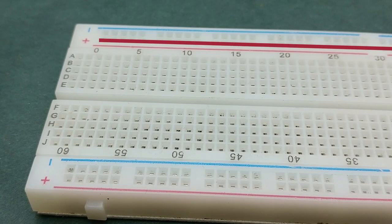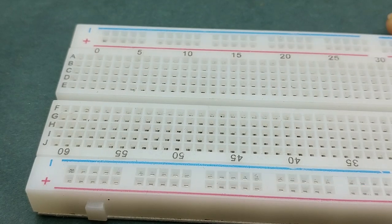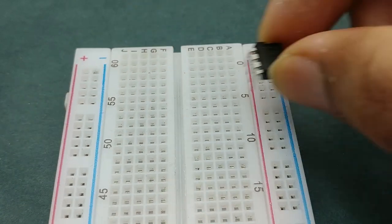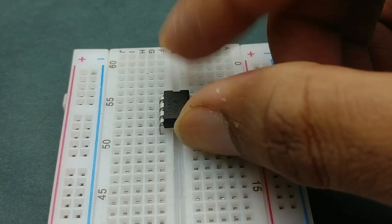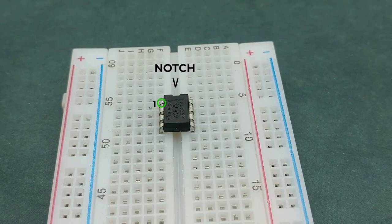I'll be using this row as positive rail and this as negative rail. Place triple fire timer IC on the breadboard with its notch facing up and these are the pinouts.